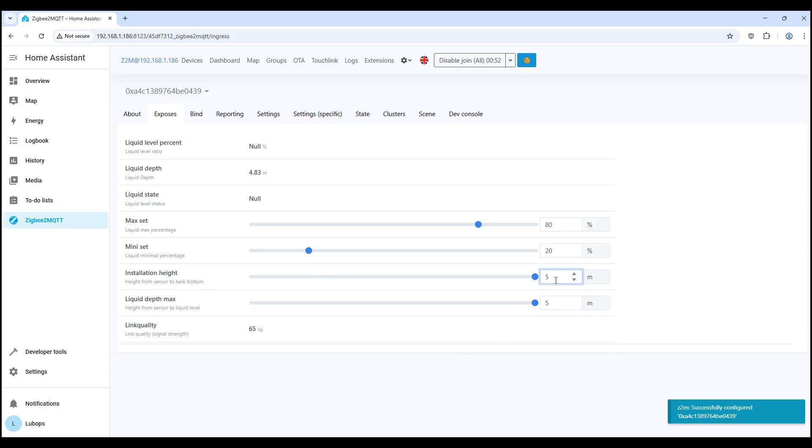Configurable parameters: Max set 80%, maximum level after which you can signal full tank. Mini set 20%, minimum level at which it is already worth giving the signal time to top up. These are exactly the percentages of the specified range that need to be set lower. For now they are working idle. As soon as we determine the installation height and max depth, everything will fall into place. Installation height 5 meters. This is the height from the sensor to the bottom of the tank. You have it set to 5 meters. It matches the depth, which means that the tank is most likely just to the brim. Liquid depth max 5 meters. This is the maximum level to which there can be water. That is, full tank is also considered 5 meters. Logical. Based on these two values, the liquid level percent and the liquid state status will then be calculated.